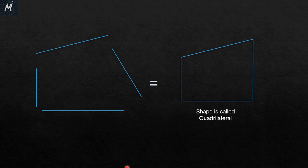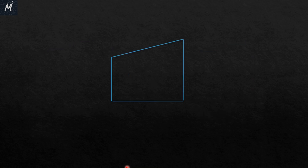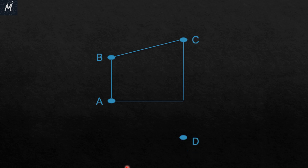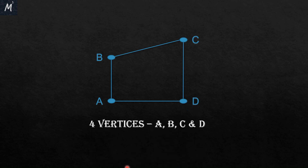I am going to first explain the parts of a quadrilateral, starting with the vertices. There are four vertices in a quadrilateral. By the term vertex or vertices, we mean the corners of the quadrilateral. So the corners are A, B, C, and D — there are four vertices: A, B, C, and D.